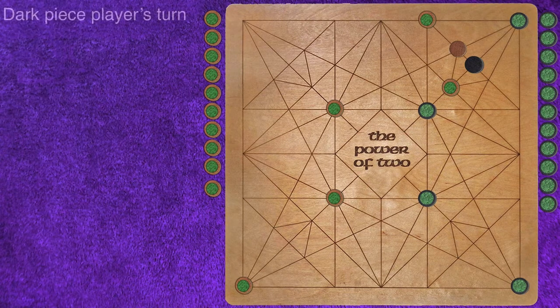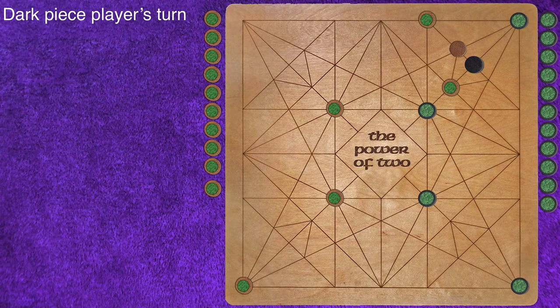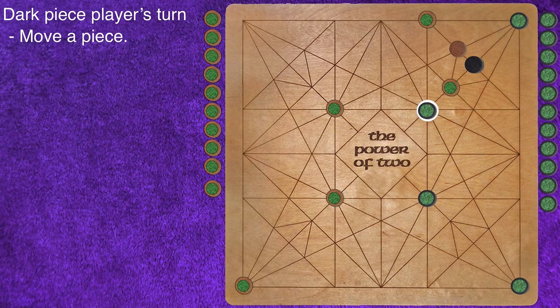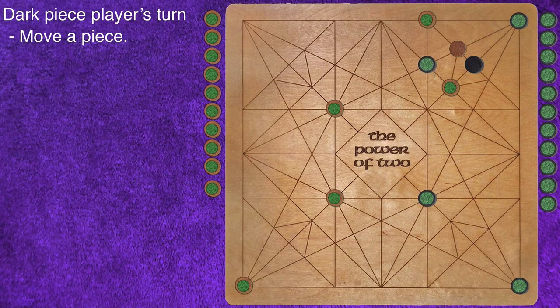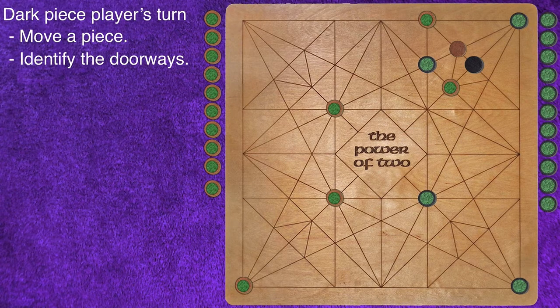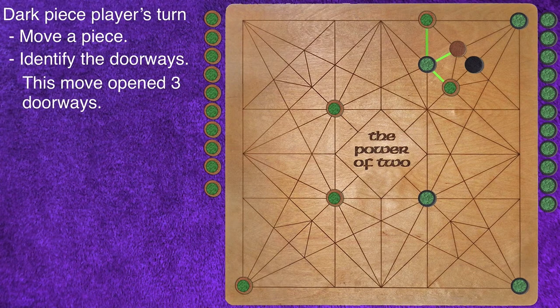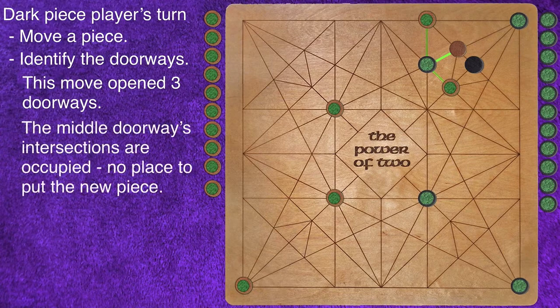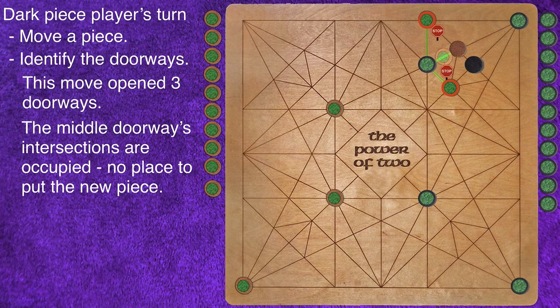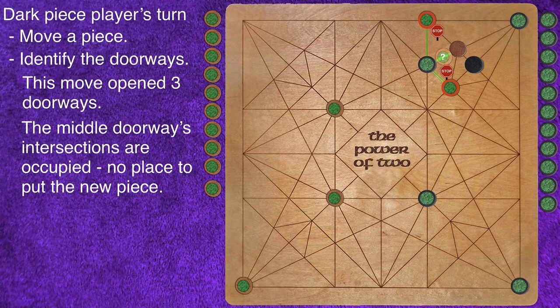For our final demonstration move, we return to the dark piece player. The player decides to move this piece to this intersection. Now we identify the doorways. We see that three doorways have been opened. But if we look at the middle doorway, we see that both of the intersections are occupied, so there is no place to put the new piece.